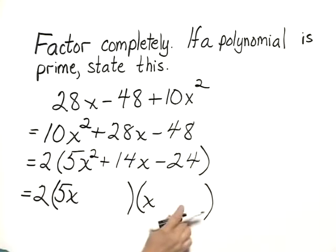The product of the last 2 terms will be 24. Now we have a lot of choices for 24. We have 1 and 24, 2 and 12, 3 and 8, 4 and 6. And 1 must be positive and 1 must be negative.